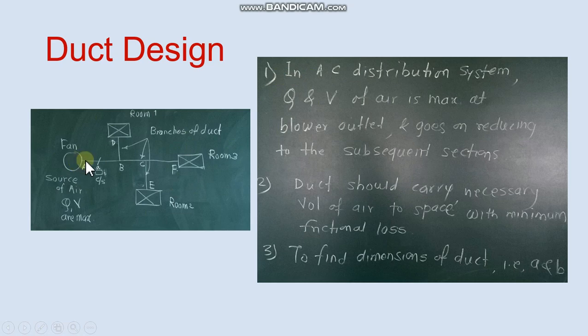Here is a fan and these are the locations where air is to be passed. So these are the ducts AB, BC, CF, CE and DB which can be used. In air conditioning distribution system Q and V of air is maximum at blower outlet. It goes on reducing to the subsequent section. So duct should carry necessary volume of air to the space with minimum friction loss.